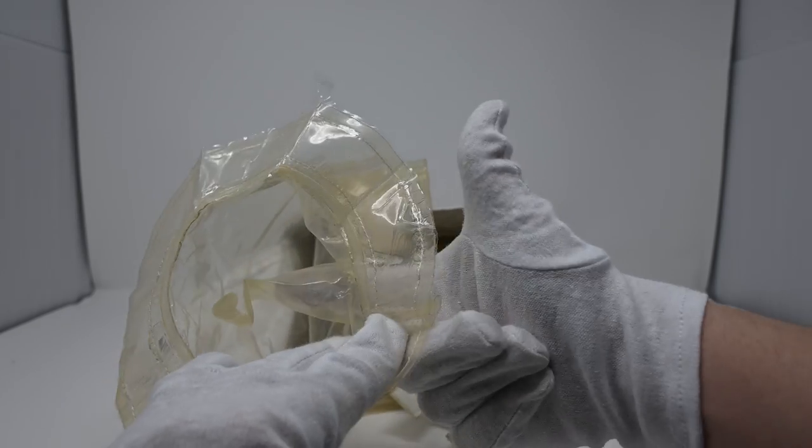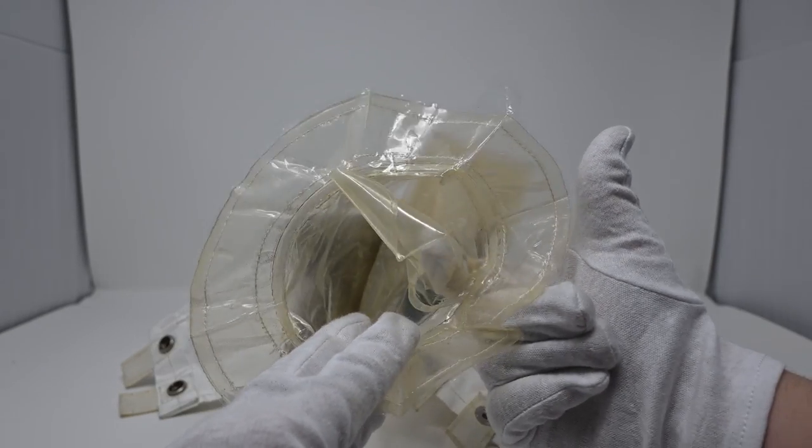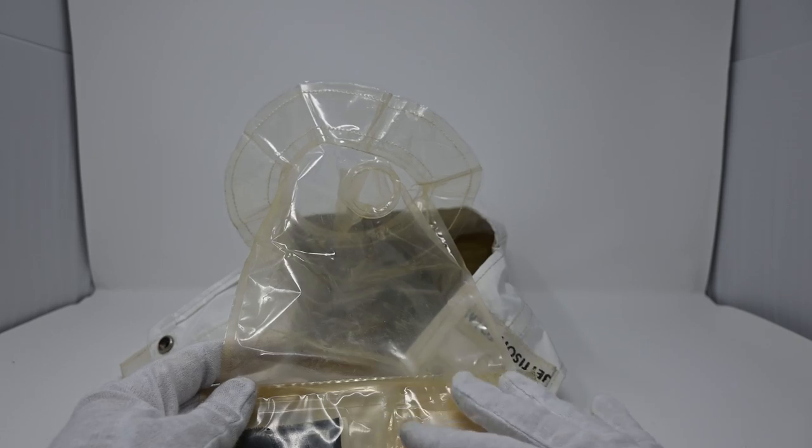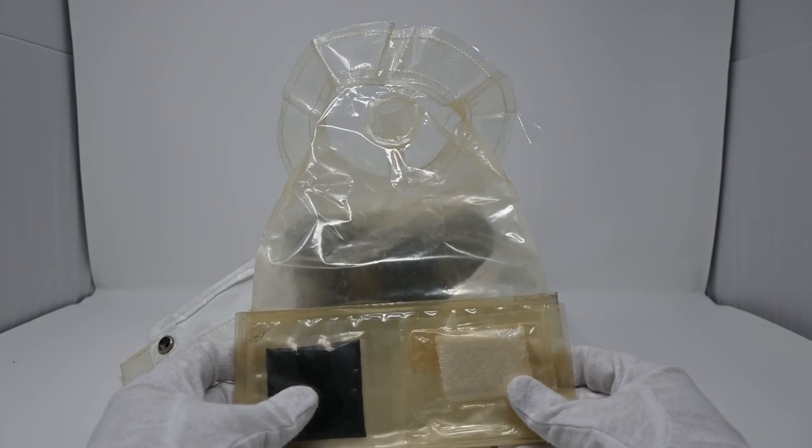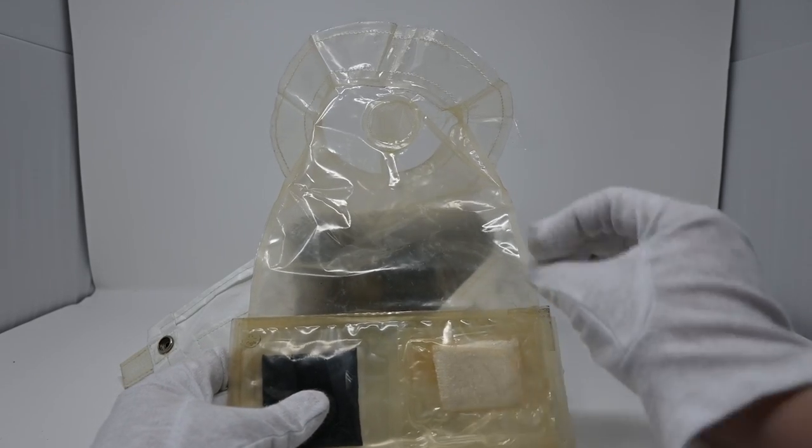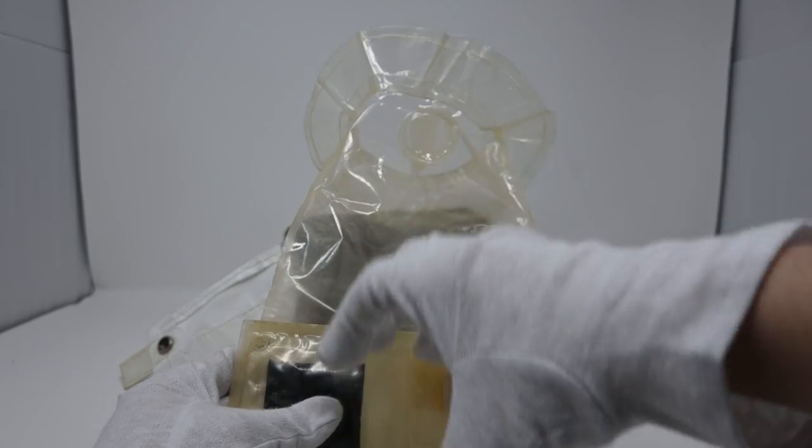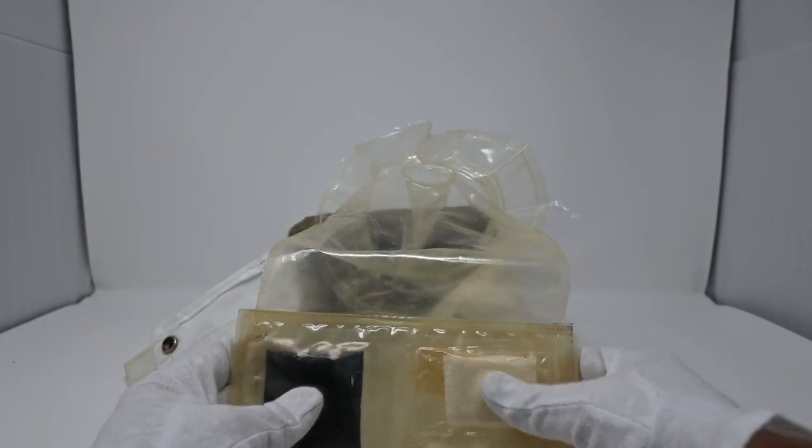And this finger cot was used to help usher the poop along to the bottom of the bag. Obviously we're dealing with a zero-g environment so that poop kind of wants to escape and go and explore the Apollo command module. So this was to keep everything, move everything along to the bottom.